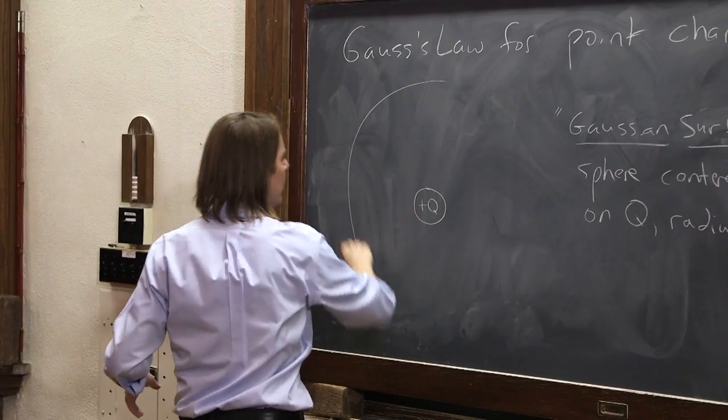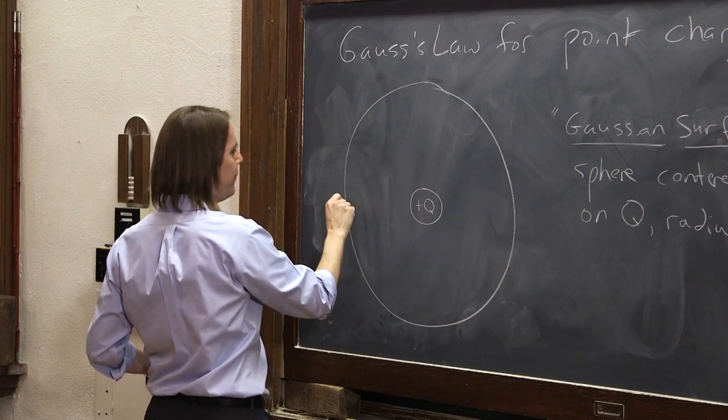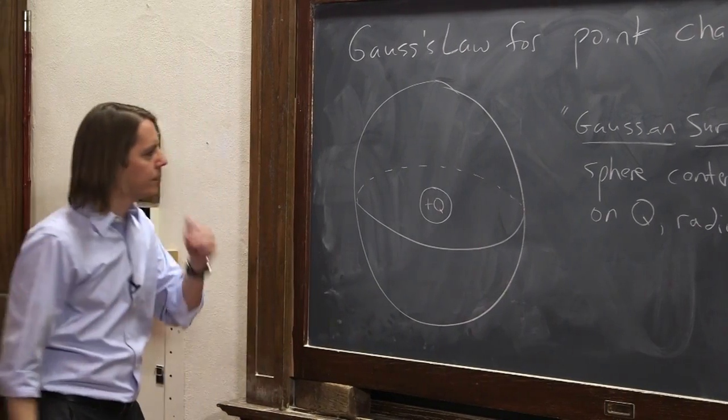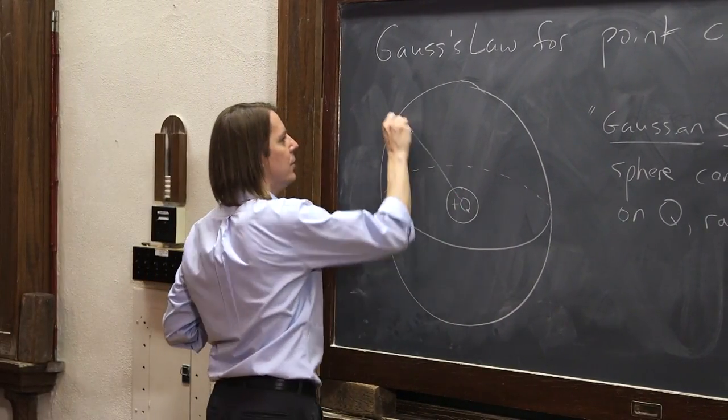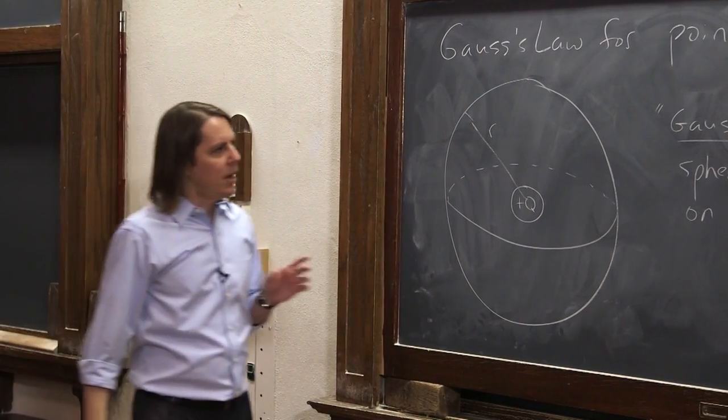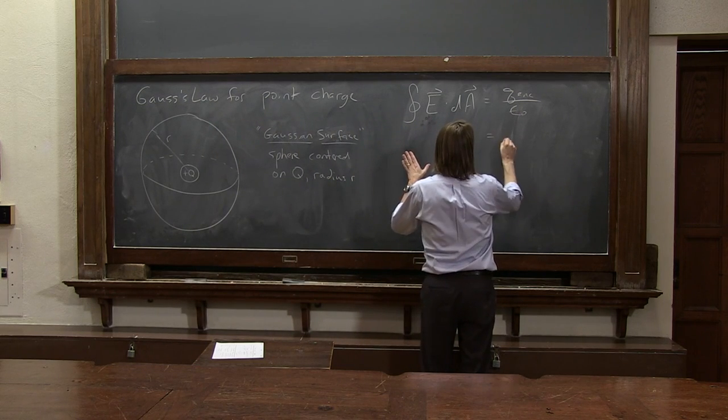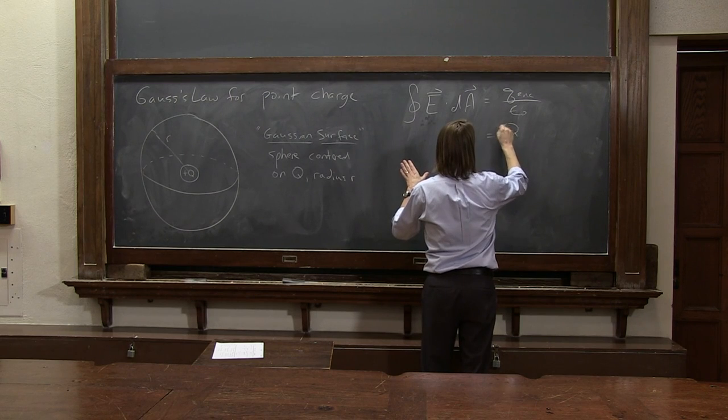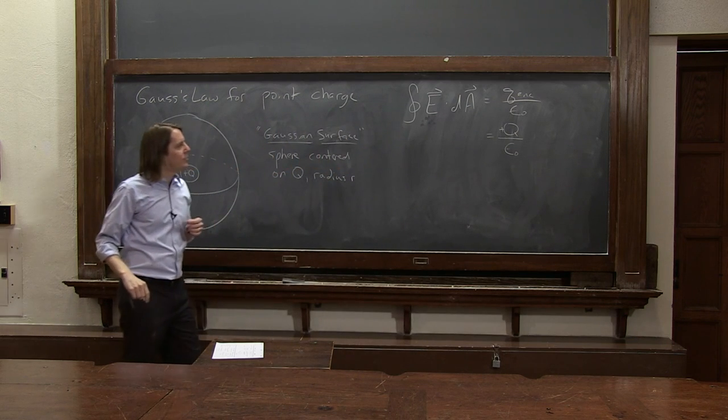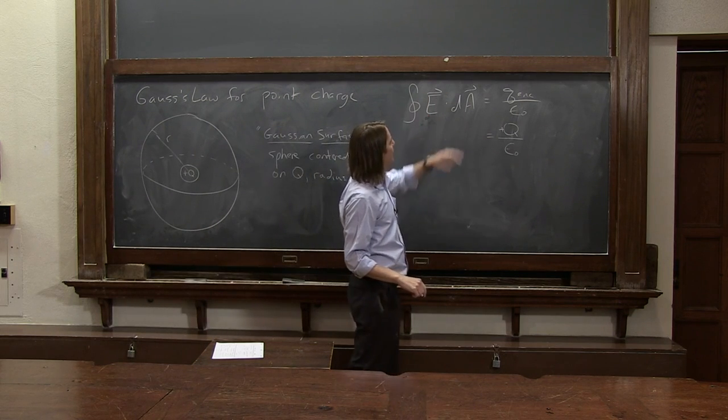So let me draw such a sphere around Q. It's a three-dimensional surface going around Q with radius R. That's our Gaussian surface. Now we apply Gauss's law. The right side is not too hard - that's the plus Q, the charge enclosed over epsilon naught.